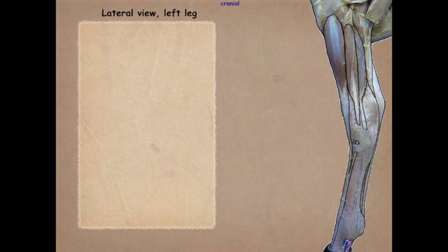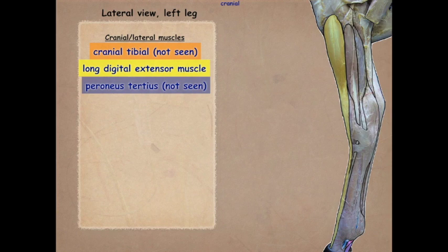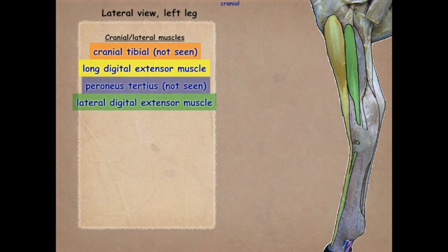The cranial lateral muscles include the cranial tibial, which is not easily seen — it's very flat and sitting right up against the cranial surface of the tibia — and the long digital extensor and the peroneus tertius. Peroneus tertius sits between the long digital extensor and the cranial tibial. We'll also see the lateral digital extensor. Those are the cranial lateral muscles.